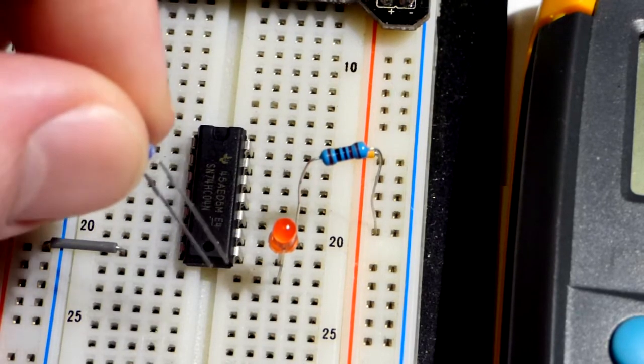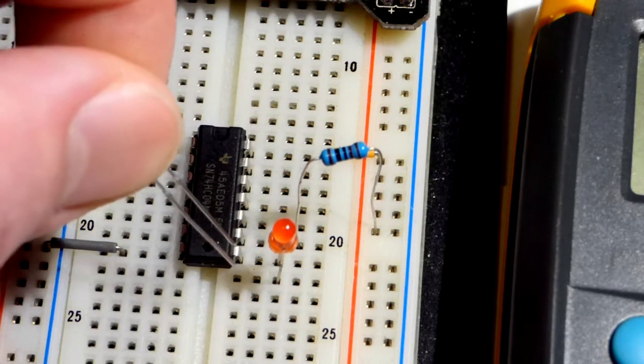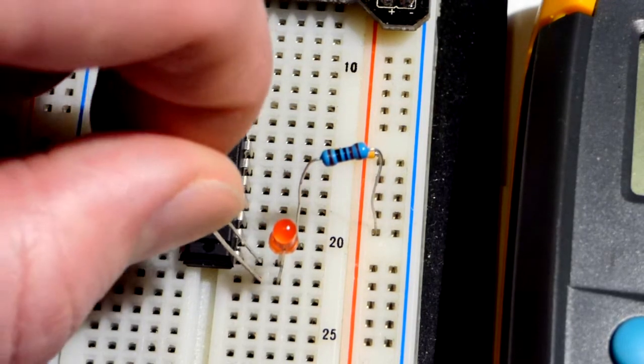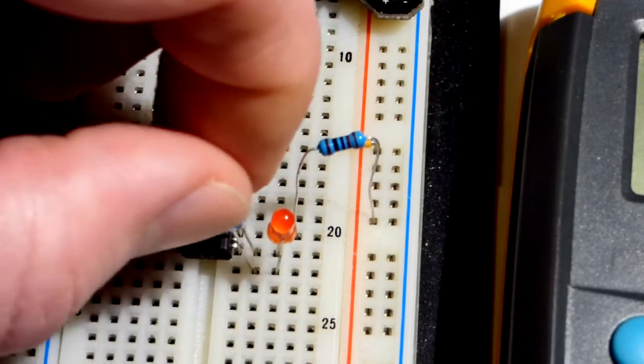The blue LED, I want it to light up when the output is more negative. So we're going to put the short lead, the cathode, to where the output of that not gate is.